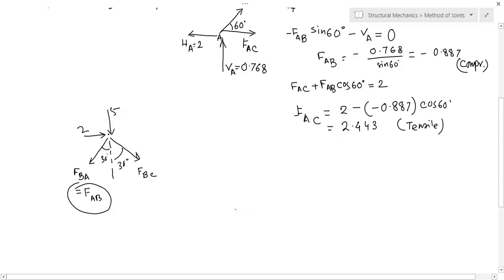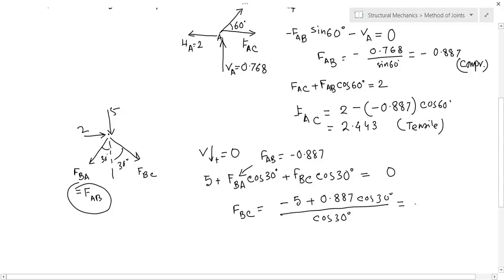What are the equations? Let us take the vertical direction to be in equilibrium. The forces are 5 plus FBA cos 60 plus FBC cos 60 is equals to zero. FBA is minus 0.887.